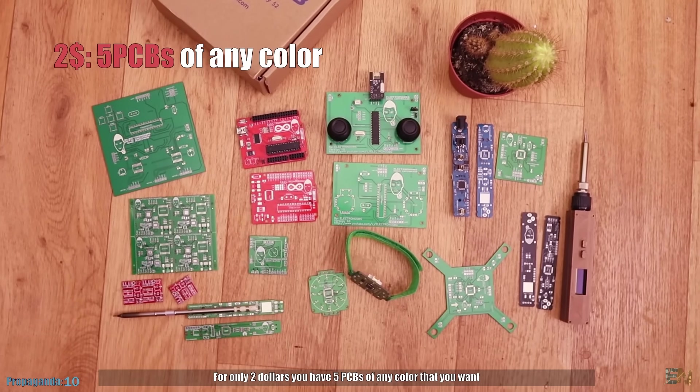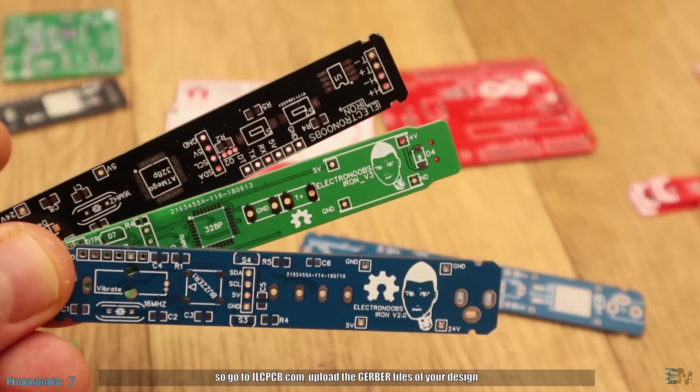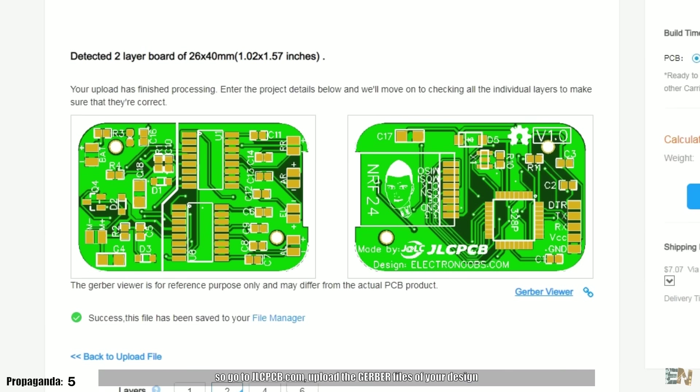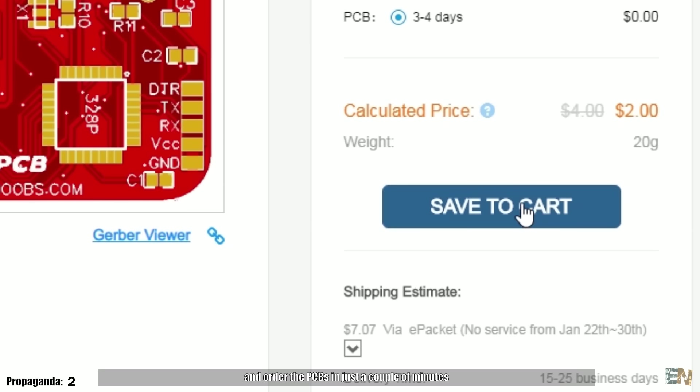For only $2, you have 5 PCBs of any color that you want. So go to jlcpcb.com, upload the gerber files of your design and order the PCBs in just a couple of minutes.